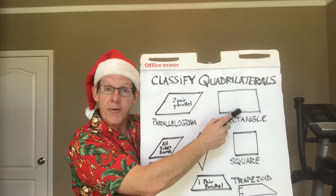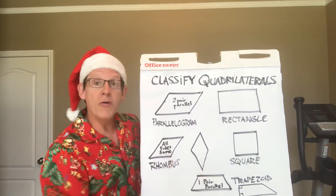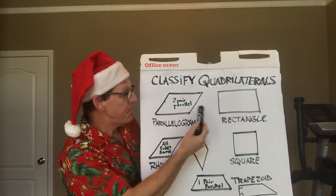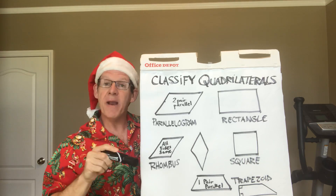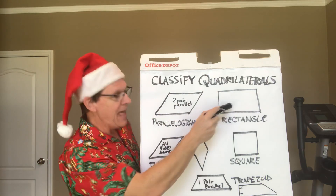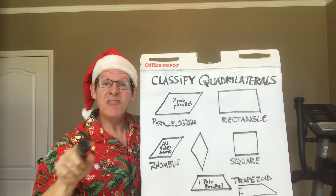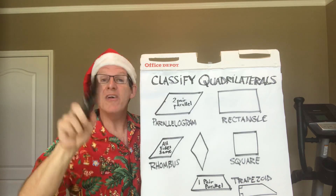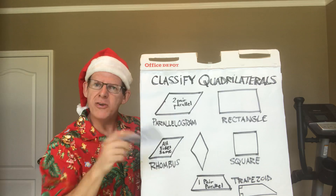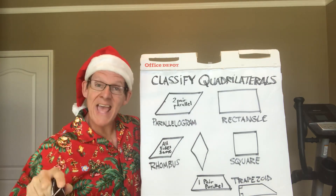This looks like a present right here. It's a shape you guys have known for years and years. It is called a rectangle. And did you know it is a parallelogram? It's a parallelogram, but it's a little different. What do you notice different about these two? It has to do with the angles — right angles. They're called right angles.